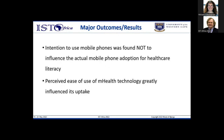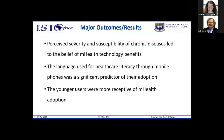One of the main outcomes was that the intention to use mobile phones was found not to directly influence actual mobile adoption for healthcare literacy. It was the perceived ease of use of mHealth technology that directly influenced uptake. Perceived severity and susceptibility to chronic diseases led to belief in mobile phone benefits. Social influence impacted users' belief towards mobile phone ease of use. Language used for healthcare literacy was a significant predictor of adoption, and younger users were more receptive to mobile phone adoption.